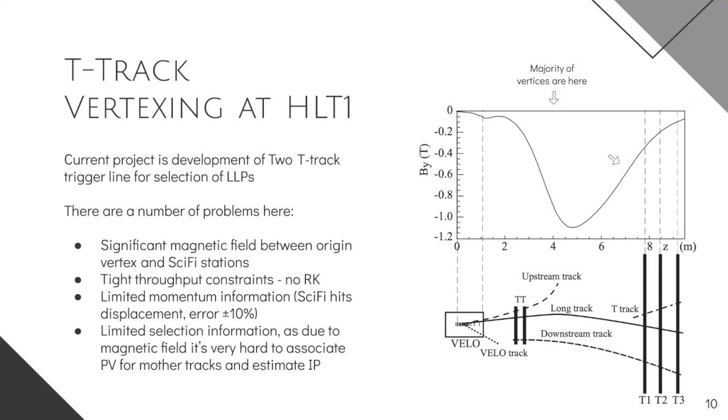In addition to this, we also have quite limited momentum information, because the only momentum information we are able to retrieve is actually calculated using some SciFi hit displacement. And therefore, it has an error about 10%. And finally, we have limited information for the selection. We have limited amount of the parameters we could use in our, for example, neural network. Simply because between the point of the origin vertex and between the VELO, for example, we also have quite a big distance, a quite strong magnetic field in between. And therefore, we are not able to easily assign for each daughter particle the corresponding primary vertex. And therefore, we are unable to actually get the impact parameter. But nevertheless, we are going to try to solve these problems and to get some vertexing algorithm using the vertexing during this summer. And I hope that we will get some beautiful results. So that's it. Thank you for your attention.